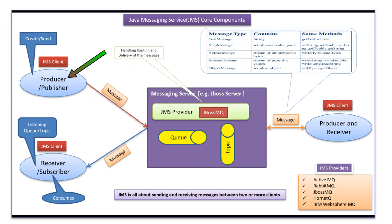Here you can see a producer or publisher which creates messages and sends them to the JMS provider. The JMS provider is in the messaging server and has a queue or topic. Messages will be stored in the queue or topic. Here you can see a receiver or subscriber which will be listening to the queue or topic, and if messages are available, the receiver or subscriber consumes messages from the queue or topic.